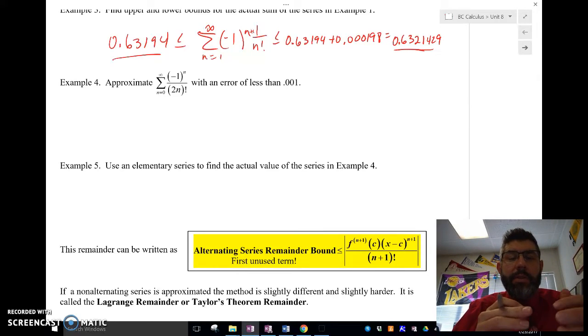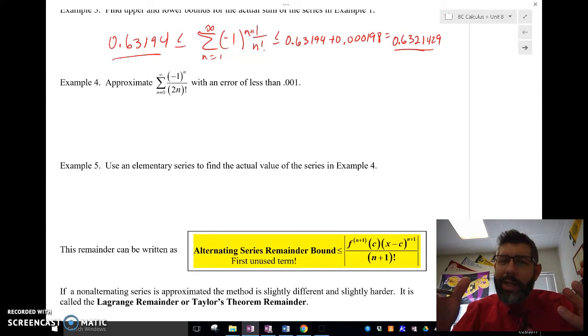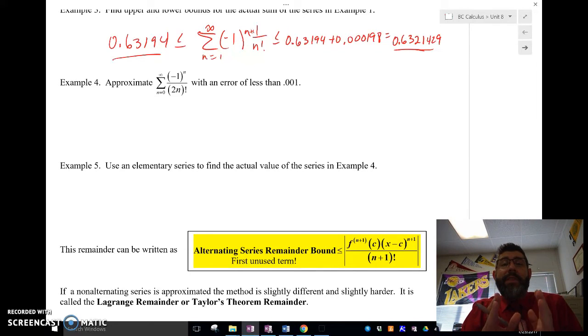Well, if I know that this is an alternating series and the remainder is going to be less than or equal to the n+1 term, really what I got to do is I got to find which term is going to give me a value that's less than 0.001.